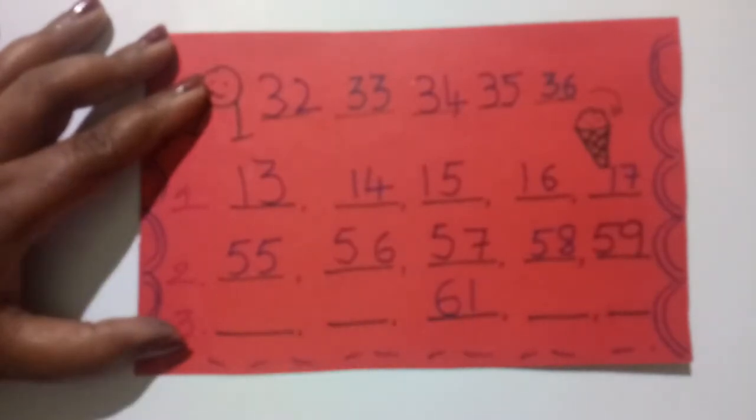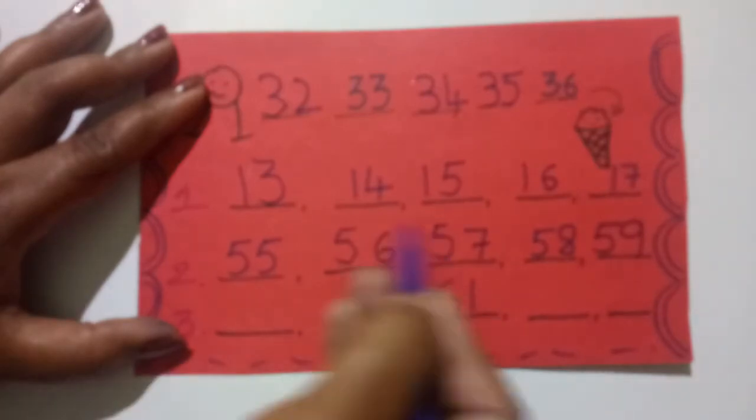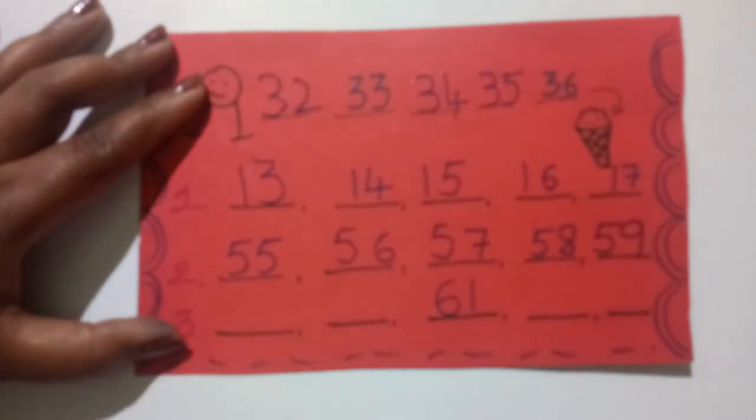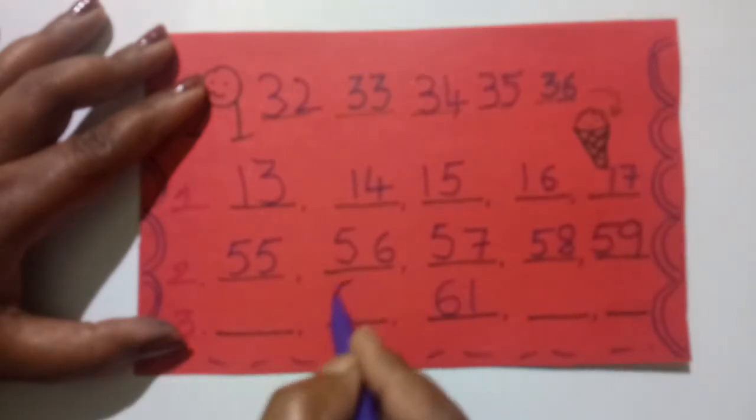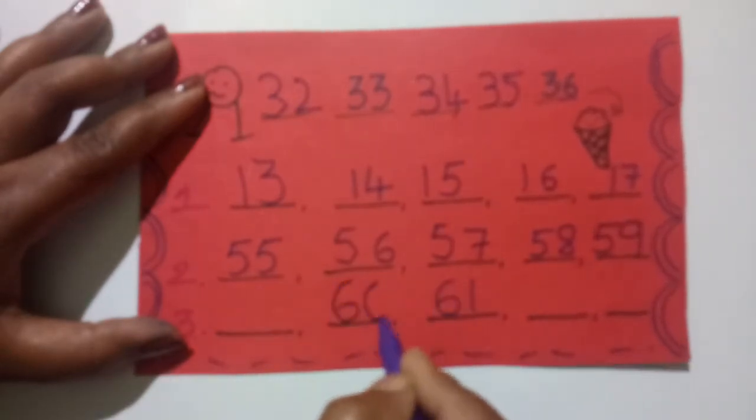Both the blanks are empty here. Now, here we have 61. Not filled here also. Not filled here also. First, let us fill this. The blank which is just next to 61. Understood? Just come back. The just before number. You must have learnt, no? Write the number which is just before. That means, before 61. That is, we get 60.